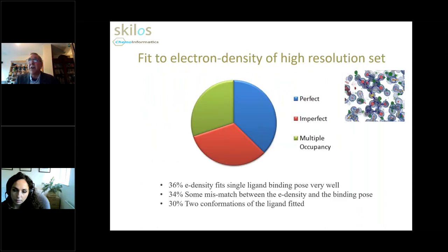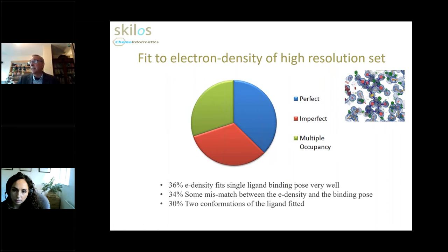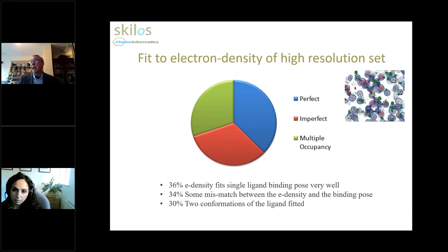Here is the categorization of the high resolution set according to electron density — it neatly divides into thirds. In one third of cases, we have a single binding pose with perfect fit to electron density. In another third of cases, we get imperfect fit to the electron density — perhaps surprising that even with high resolution structures you're still not getting absolutely perfect fit. The big surprise was that in at least a third of cases, there was multiple occupancy for the ligand: the crystallographer had taken the time to refine two conformers. Sometimes it was just part of the ligand; sometimes the whole ligand was fitted in a different conformer. That 30% figure was a significant surprise to me.